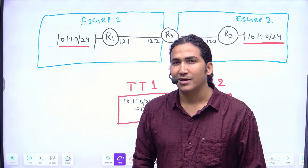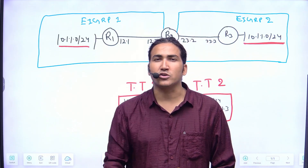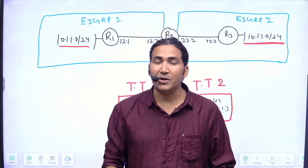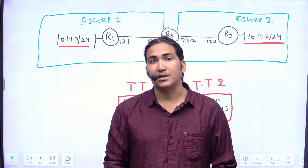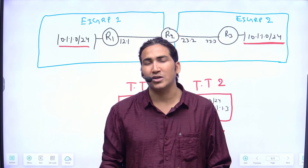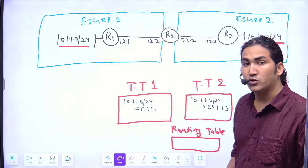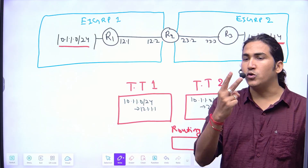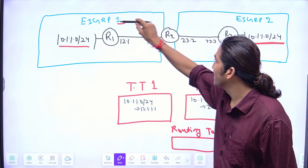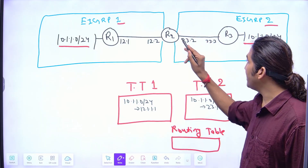First question: Can we run multiple EIGRP processes on a single router? Answer: Yes, you can run multiple EIGRP autonomous systems on a single router. In my case, on router number 2 we are running two autonomous system numbers — AS number 1 and AS number 2.